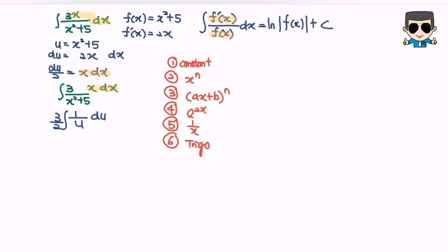So for this case we are going to use rule number 5, which is integration of reciprocal function. So 3 over 2 ln u plus c.